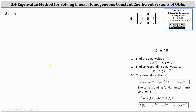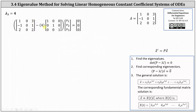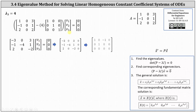Finally, for lambda sub three equals four, we set up and simplify the three by three matrix times vector V equals the zero vector. Writing the augmented matrix in reduced row echelon form: V three is a free variable, row one indicates V one equals V three, and row two indicates V two equals zero. Letting V three equal one, the corresponding eigenvector is one, zero, one.